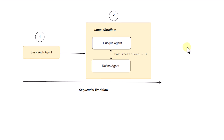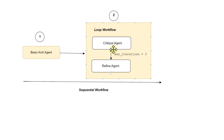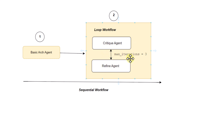Finally, we have the loop workflow agent. We'll have a basic architect agent that generates a design from the given input. That design passes to a critique agent, which critiques it and passes it to a refine agent to refine the design. This critique-and-refine cycle runs in a loop, with a maximum of three iterations defined by 'max_iteration'.